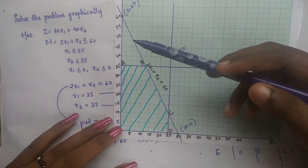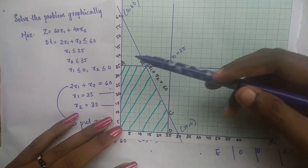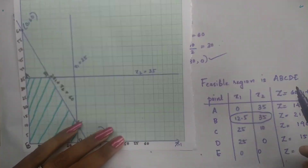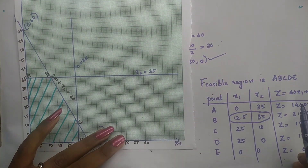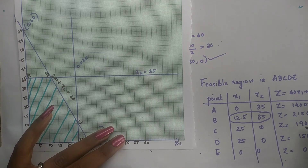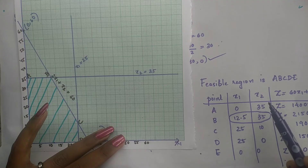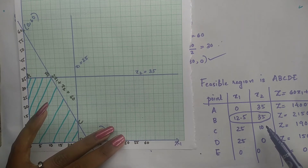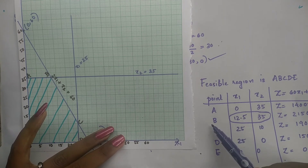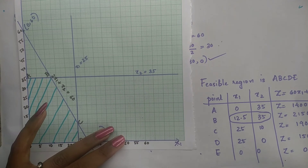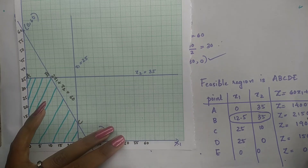We plot the points and find the feasible region with corner points A, B, C, D, and E. We find the coordinates of each point and substitute x1 and x2 values into Z equals 60x1 plus 40x2. The highest Z value is 2150, occurring at point B. Therefore the solution is x1 equal to 12.5, x2 equal to 35, and Z equal to 2150.